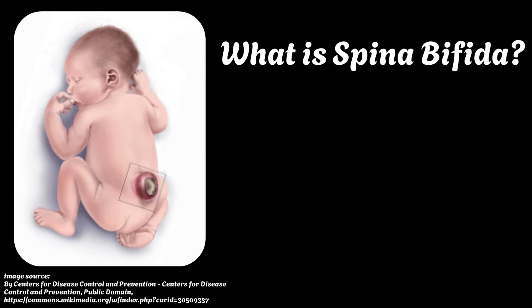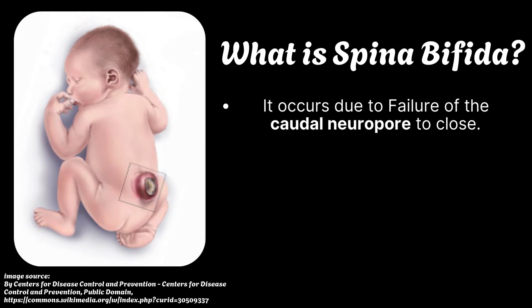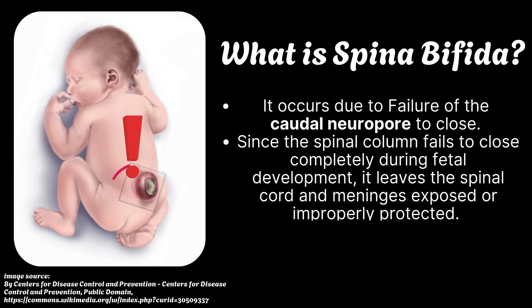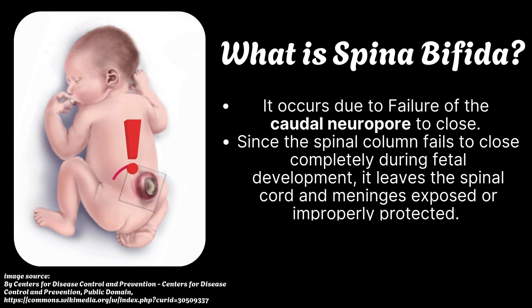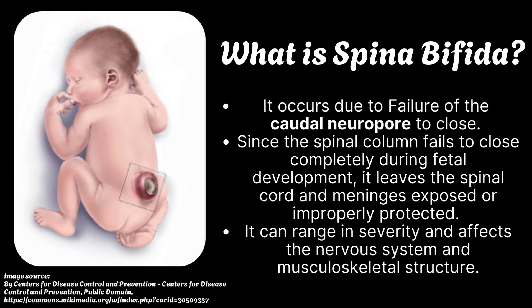What is spina bifida? It occurs due to failure of the caudal neuropore to close. Since the spinal column fails to close completely during fetal development, it leaves the spinal cord and meninges exposed or improperly protected. It can range in severity and affects the nervous system and musculoskeletal structure.